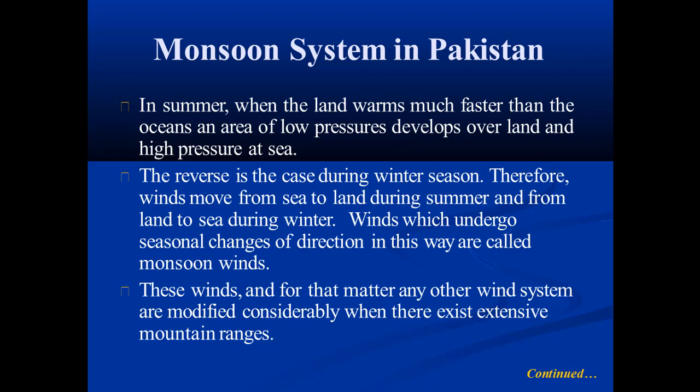In summer, the land warms much faster than the ocean. An area of low pressure develops over land and high pressure at sea, and the reverse occurs during the winter season. Therefore, wind moves from sea to land during summer and from land to sea during winters. Winds which undergo seasonal changes of direction in this way are called monsoon winds.